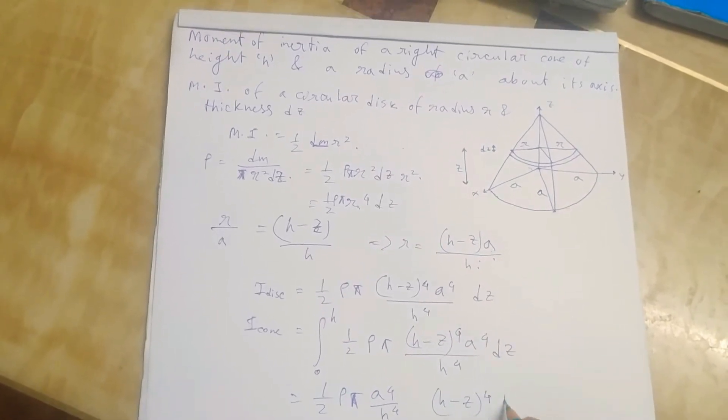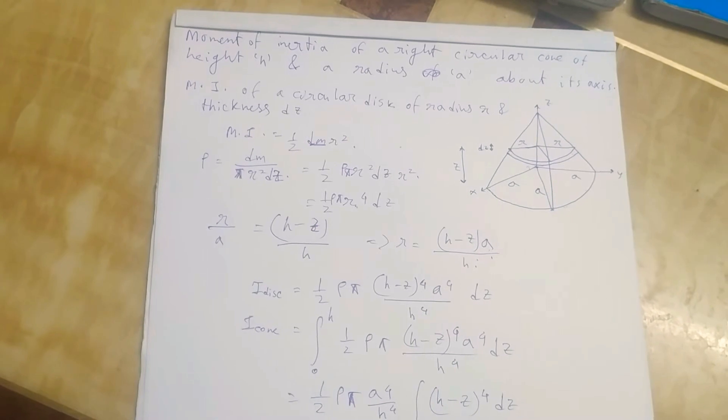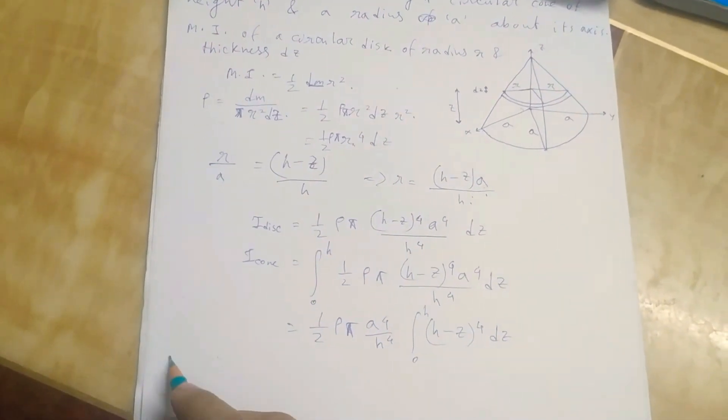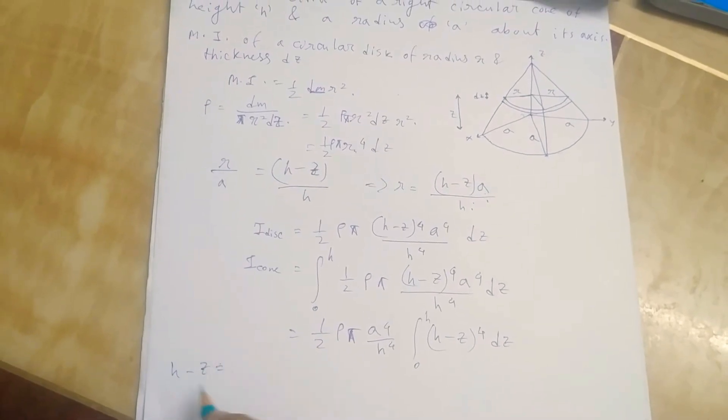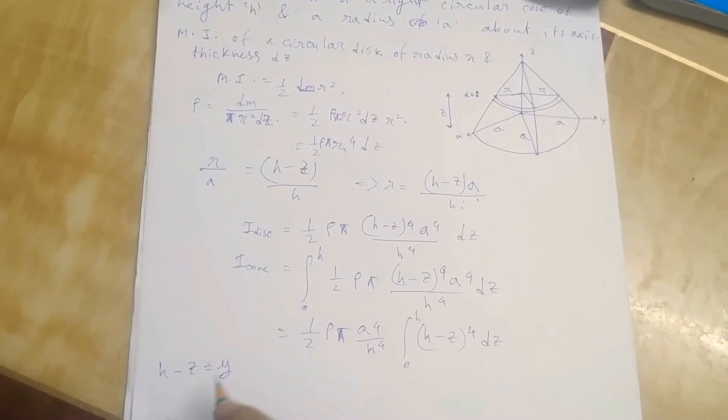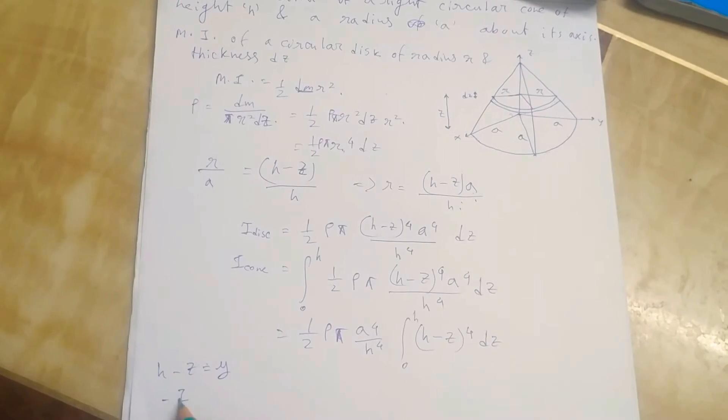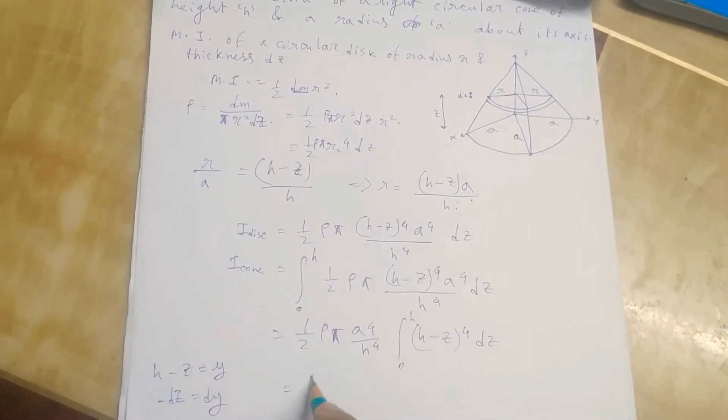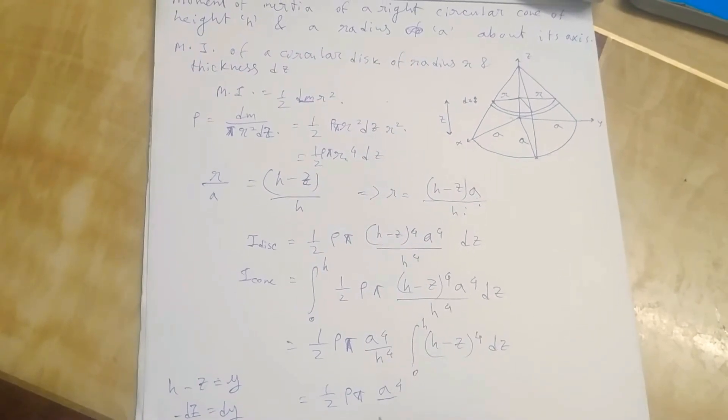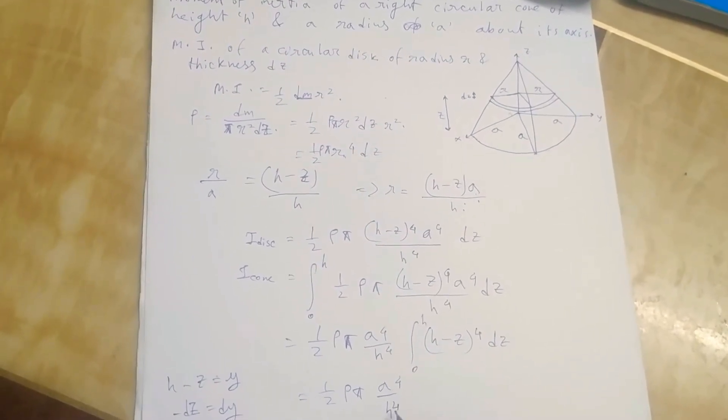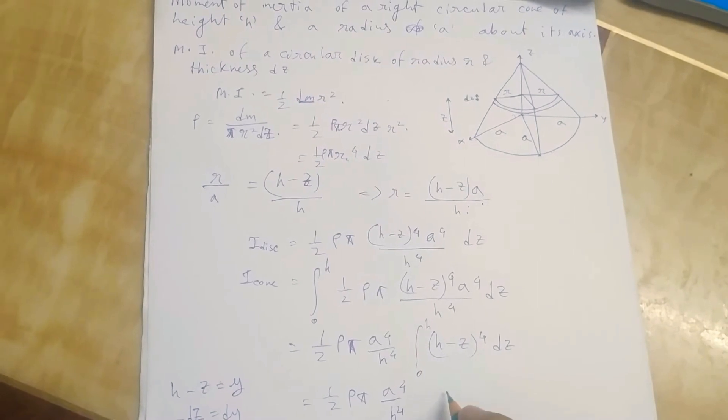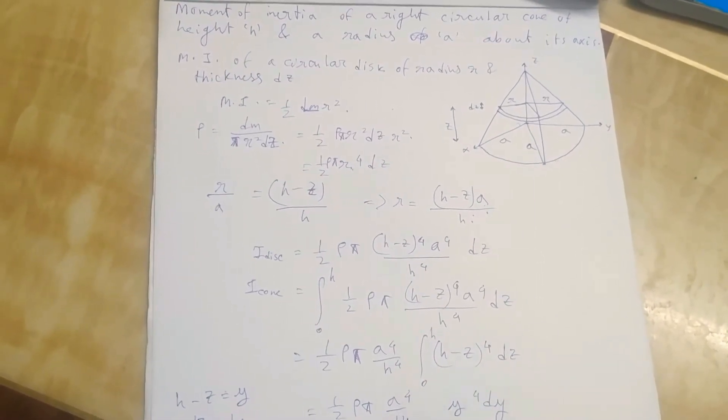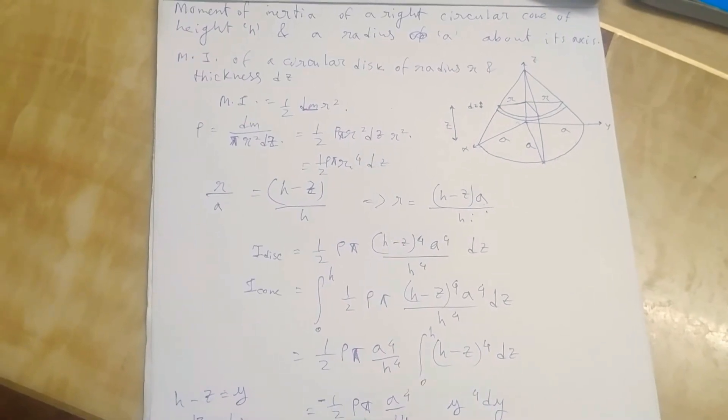We'll have only this inside. Now if we substitute, let us take h minus z is equal to y. Then minus dz will be dy. We can write half rho pi a to the 4 over h to the 4, integral y to the 4 dy with a minus sign, so we'll write that outside.